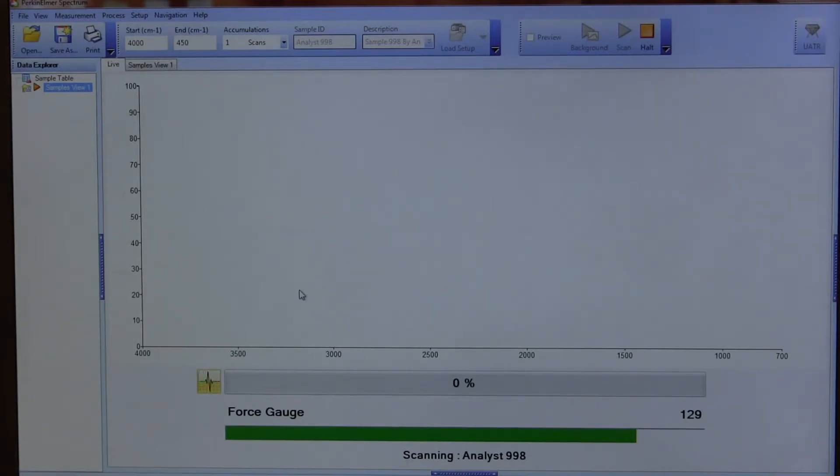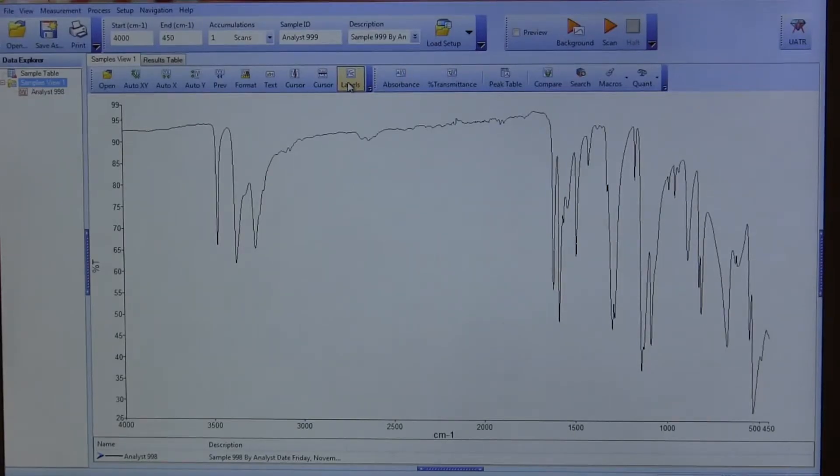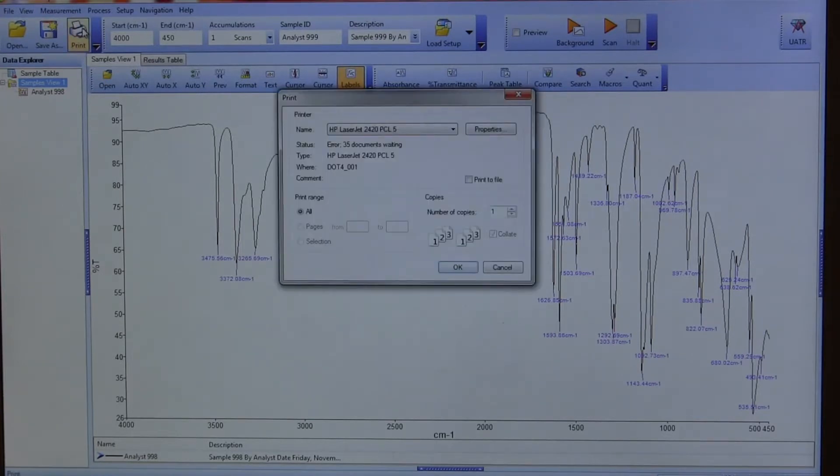When the spectrum pops up on the screen, press labels, select the PDF printer, and save to your flash drive.